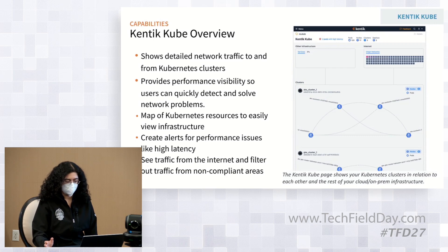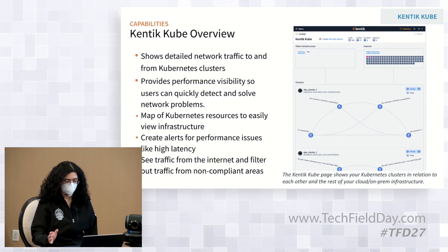The way it's set up is that there is a topology map to view the Kubernetes infrastructure, and also the flow of traffic between the Kubernetes resources, the internet, and whatever other infrastructure you have. That gives kind of a bird's eye view, and it also makes it possible for the user to see if the network reality matches the policies they've set for their various Kubernetes resources.